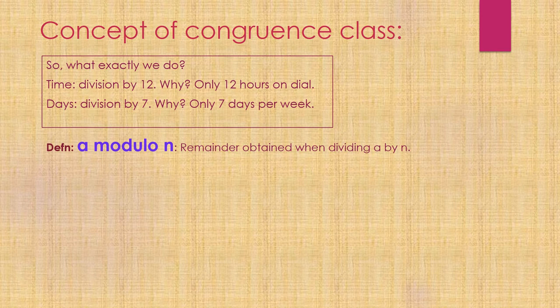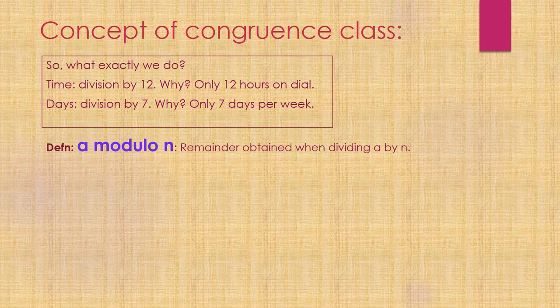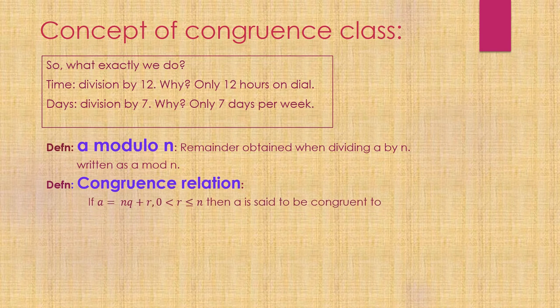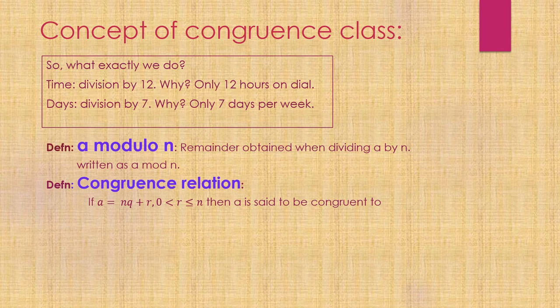This gives rise to the concept of finding the remainder obtained when a is divided by n, denoted by a mod n. One more relation I want to define is the congruence relation. From Euclidean algorithm, we know a equals nq plus r. If I have this relation between a and n, I can say a is congruent to r modulo n.